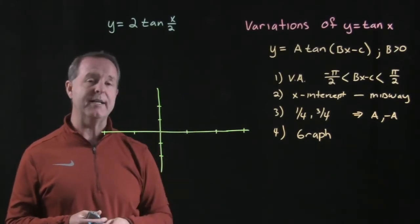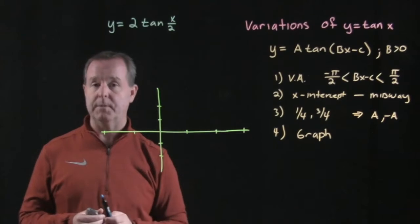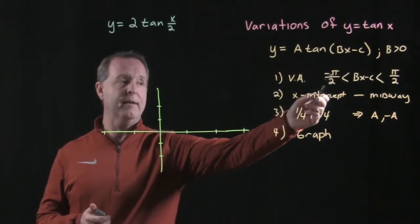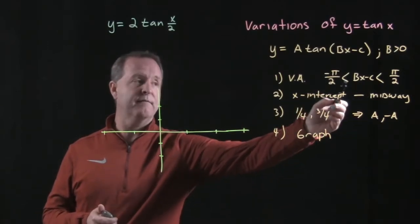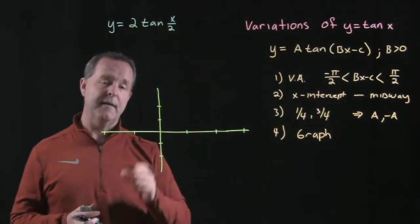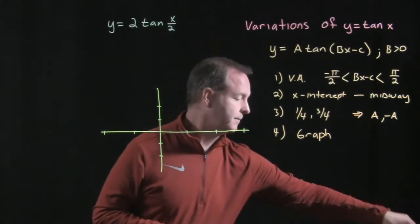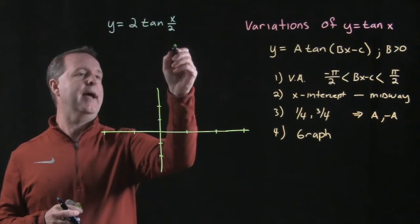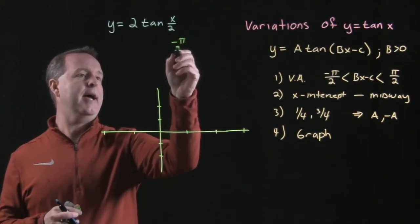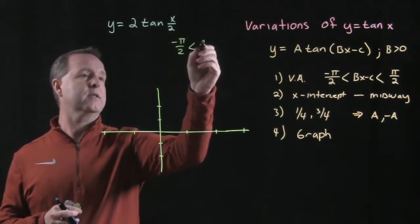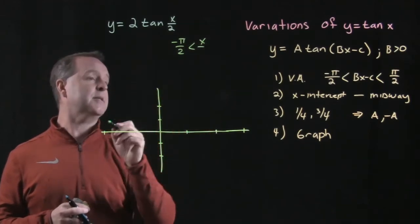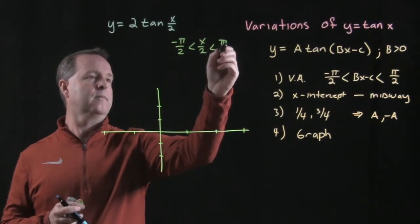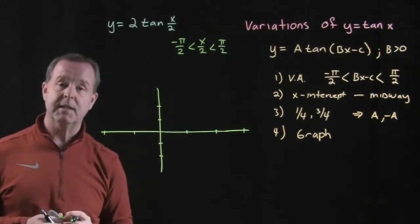The first place we start is we try to identify where the vertical asymptotes are at. We determine that by looking at a period from negative pi-halves to pi-halves, and finding the values of bx minus c that are in between those two values. This determines the period.